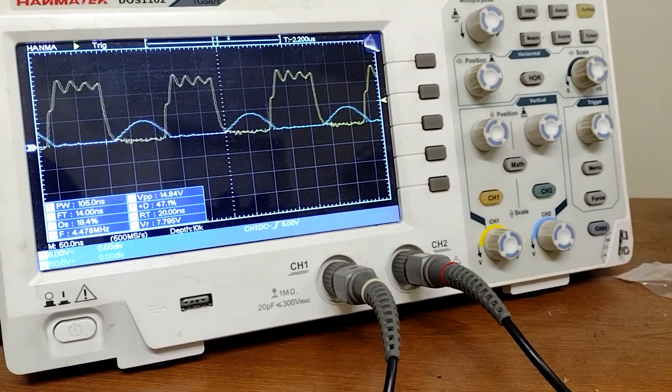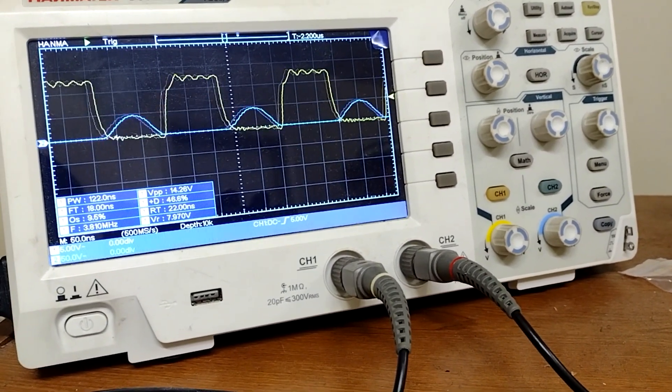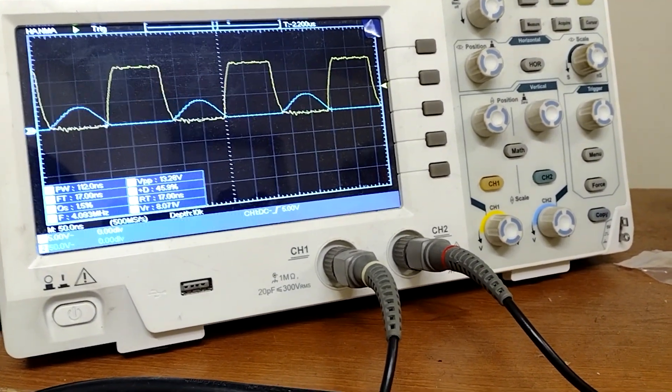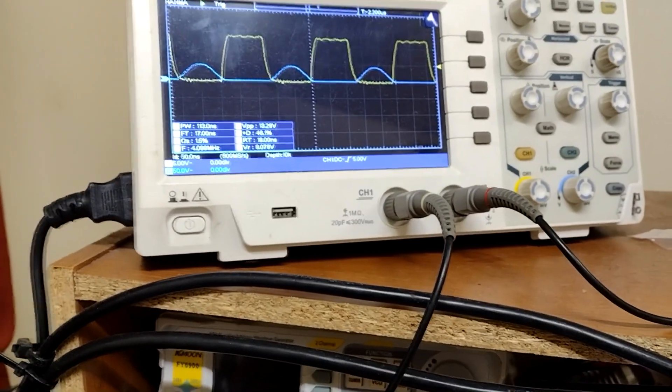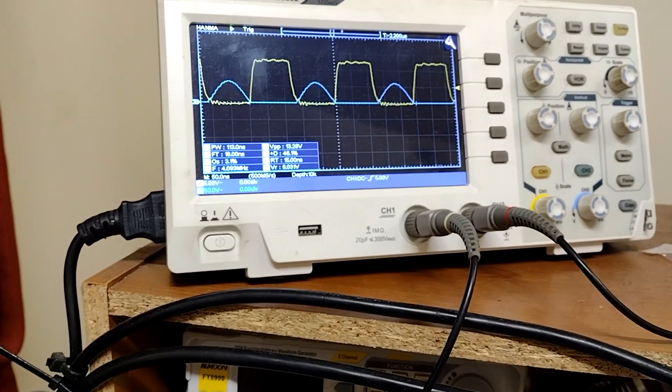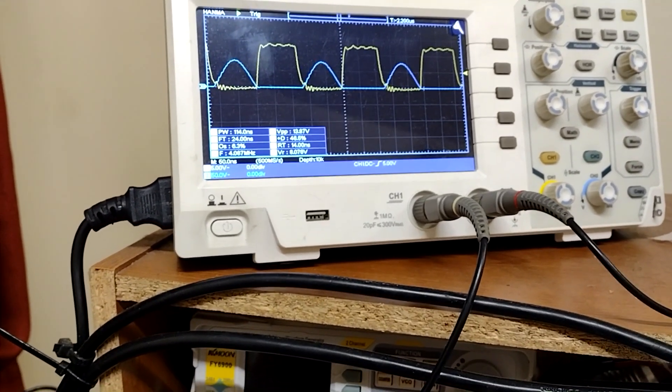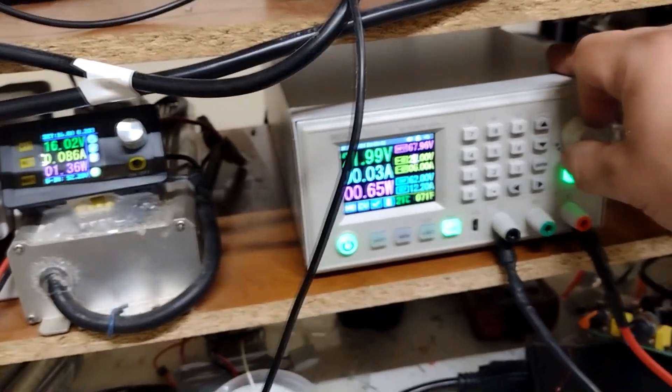So this is telling me that you see where that gate waveform starts to smooth out? About that four megahertz region is where this is tuned decently.